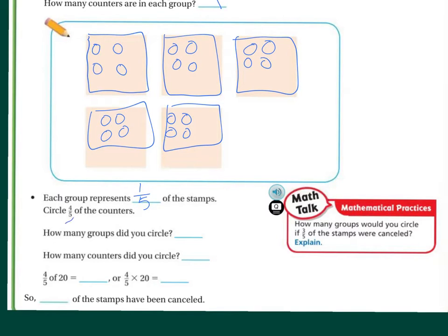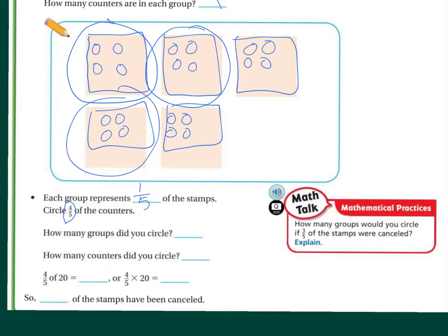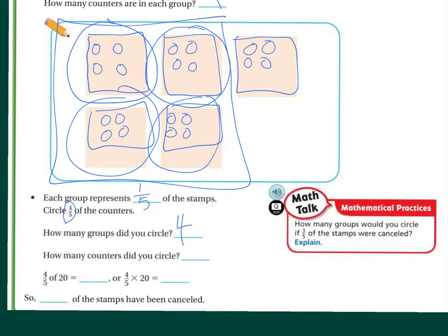Now, if I want to circle four-fifths of the counters, I'm going to circle one, two, three, four groups — because that's four of the fifths. So I'm making four circles. How many counters did I circle? Let's count them: 1 through 16. I circled 16 counters. So, four-fifths of 20 is 16, or four-fifths times 20 is 16. Sixteen of the stamps have been canceled.